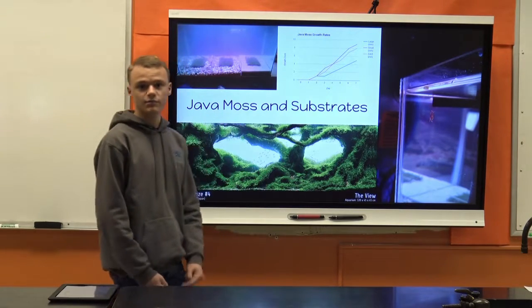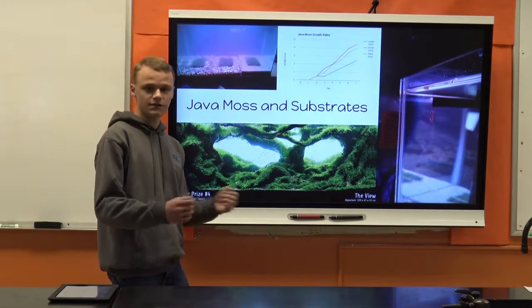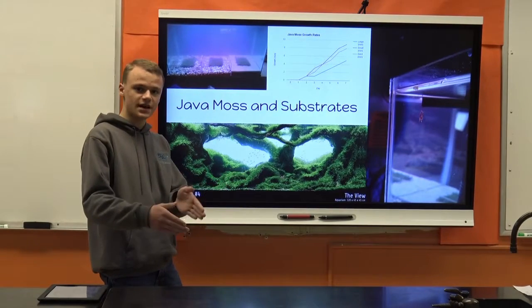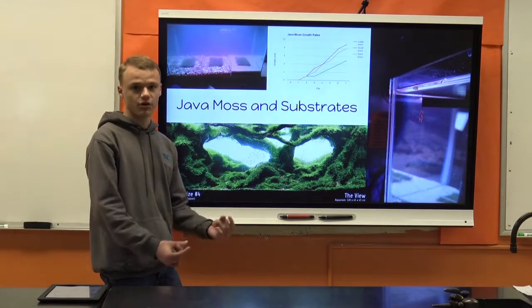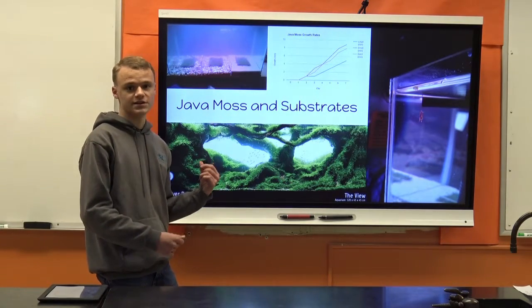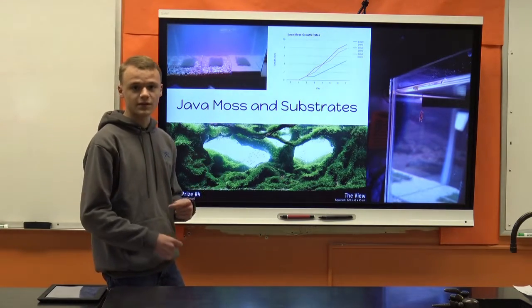Other things I would probably do differently would make my water dispersal more even in my tank because the filter was on one side, and I would also probably add CO2 because CO2 can really help plants grow. I also didn't have any fish in there creating CO2, so my plants probably didn't have a whole lot.